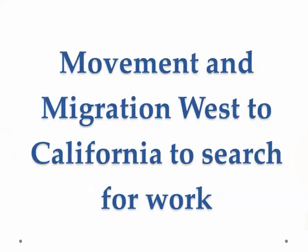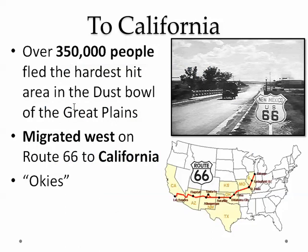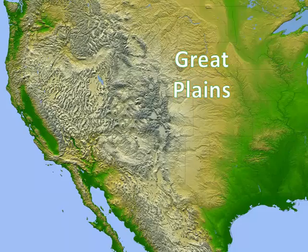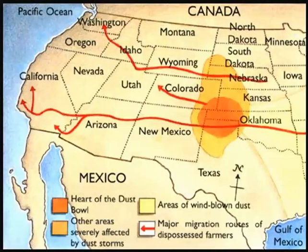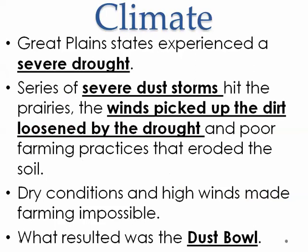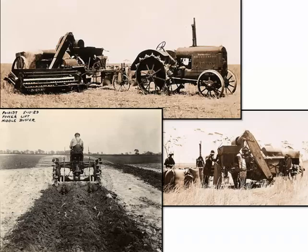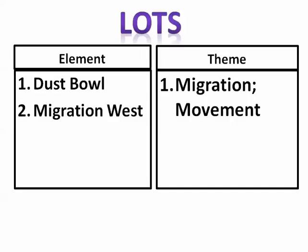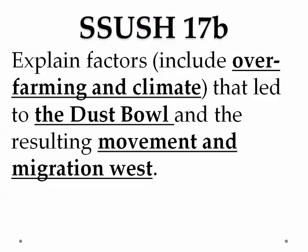In the book we see that 350,000 people fled the Dust Bowl area and migrated west to California — the land of milk and honey. We talked about what caused the Dust Bowl on the Great Plains: over-farming, drought, intense heat, climate conditions, new farm equipment, and the deterioration of the buffalo grass. We've met these elements: Dust Bowl and migration west — explaining factors including over-farming and climate that led to the Dust Bowl and the resulting movement and migration west. If you have any questions, ask me in class. Good luck on the quiz, test, and the OC.